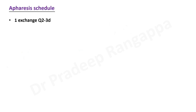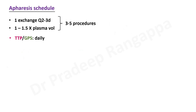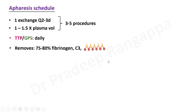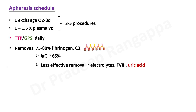The apheresis schedule is one exchange every two to three days, with 1 to 1.5 plasma volumes per exchange. In severe TTP, daily exchange may be done. A total of three to five procedures may be needed. For severe conditions like TTP or Goodpasture syndrome, daily plasmapheresis may be required. Apheresis removes 75–80% of fibrinogen — so fibrinogen monitoring is important — and removes complement, immune complexes, and 65% of IgG. Apheresis is less effective at removing electrolytes, factor VIII, and uric acid.